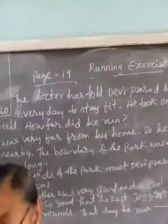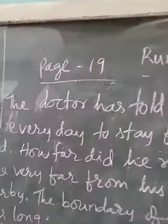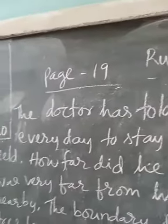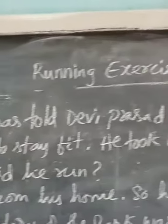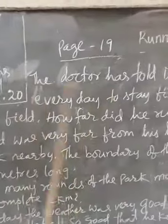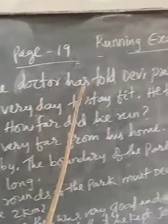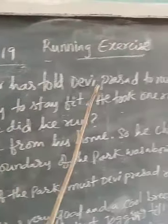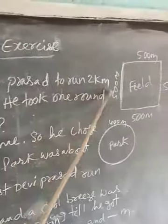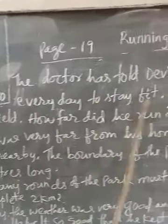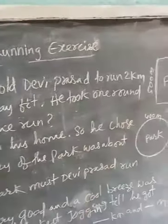Open your test book, question number 90. I have written the question here. I am reading the question — listen. The doctor has told Devi Prasad to run 2 km every day to stay fit. He took one round of this field. How far did he run? This is the question.